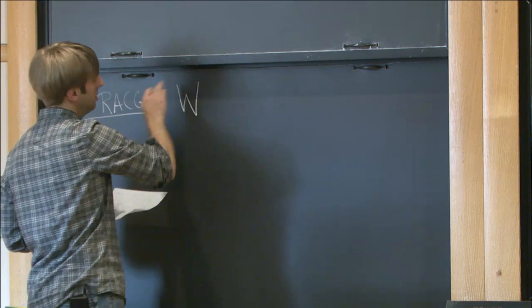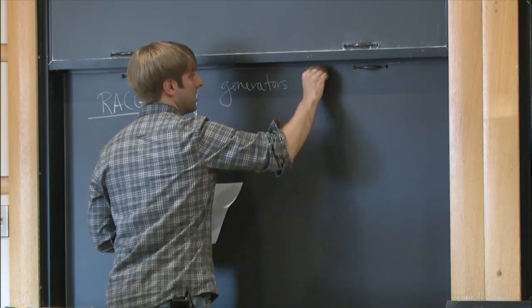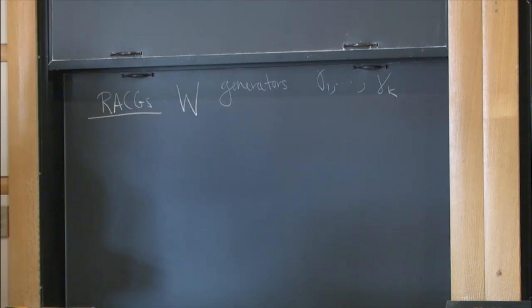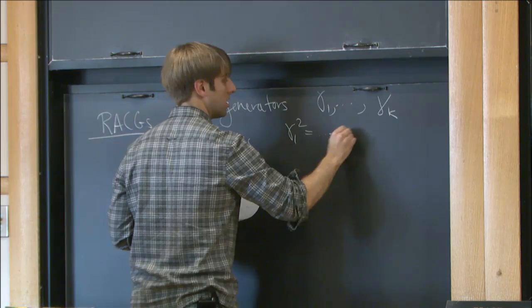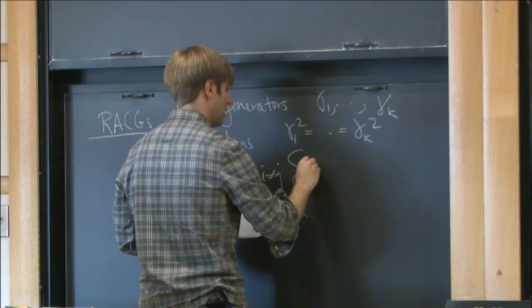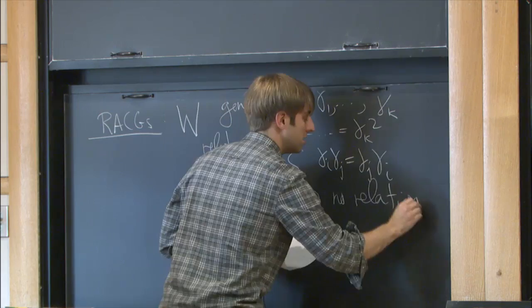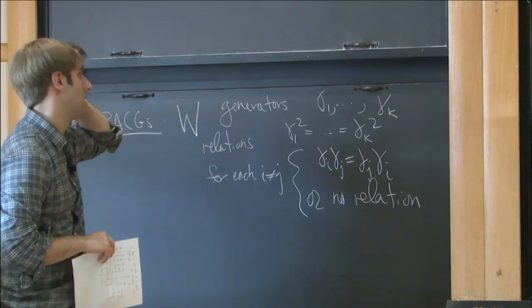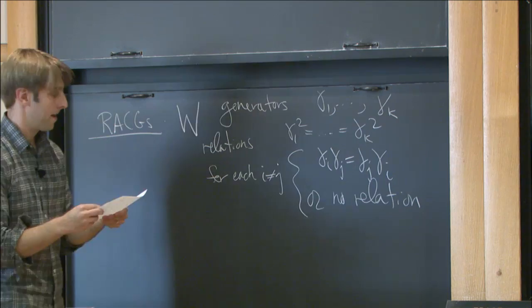What is a right-angled Coxeter group? It's a group W generated by k generators, all of order two. For each pair i ≠ j, we choose either: gamma_i and gamma_j commute, or there's no relation between the two. So essentially you take k generators and decide that some of them will commute and some will not. You get what's called a right-angled Coxeter group.